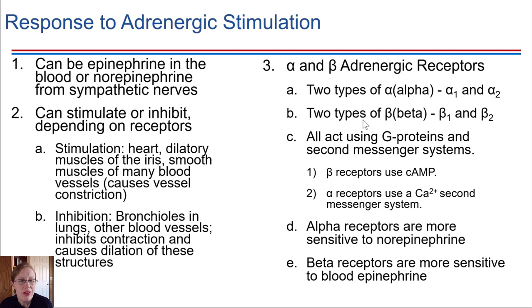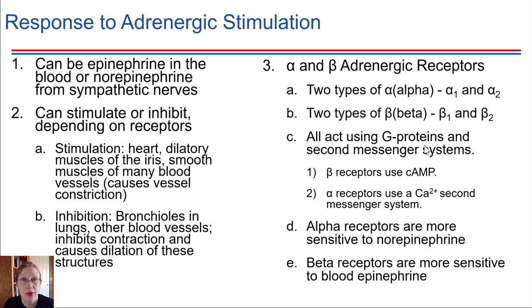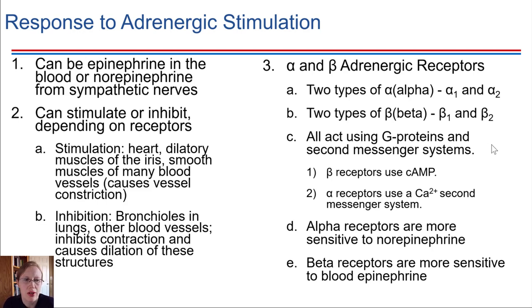What do they all have in common? They all respond by using a G-protein second messenger system, which we have seen before — where there's a G-protein that splits apart and goes to activate something else in the cell membrane. The fact that there are so many different types means there are a lot of different signaling cascades that can be activated in the cell.